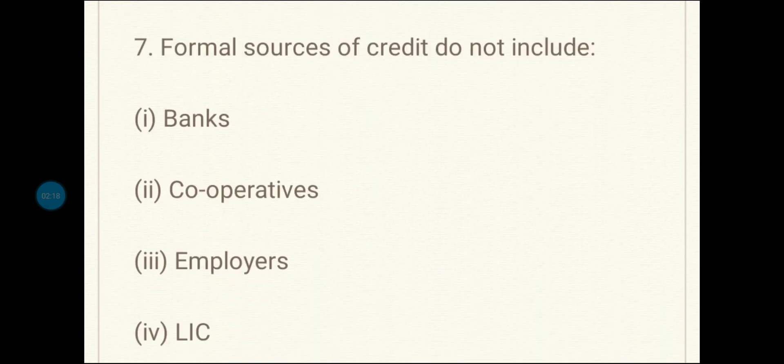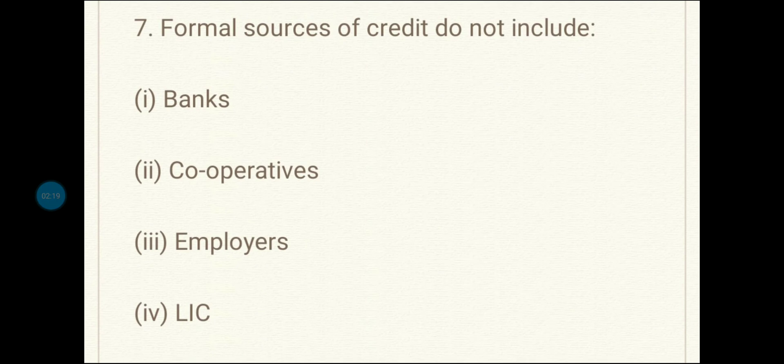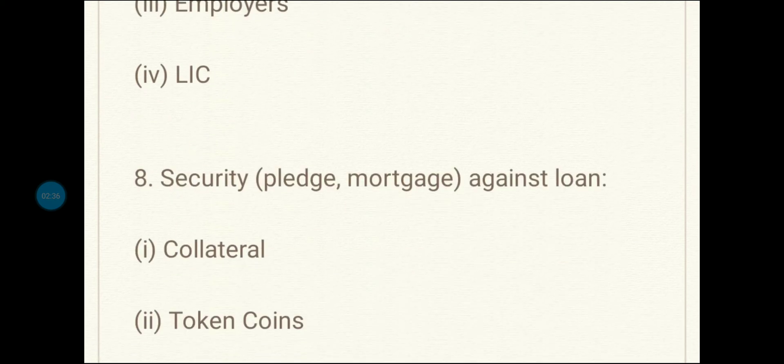Seventh question: formal sources of credit do not include — note the question says 'do not', so you need to find the option that is not a formal source. Options are banks, cooperatives, employers, and LIC. The correct answer is the third option: employers.